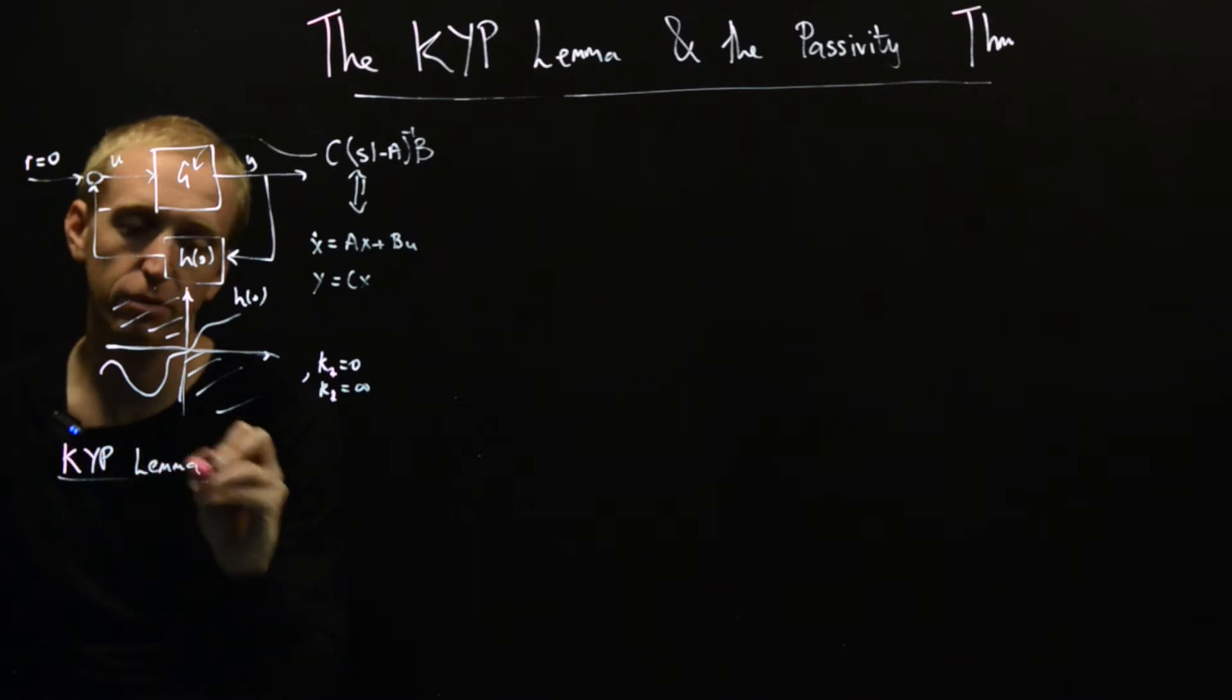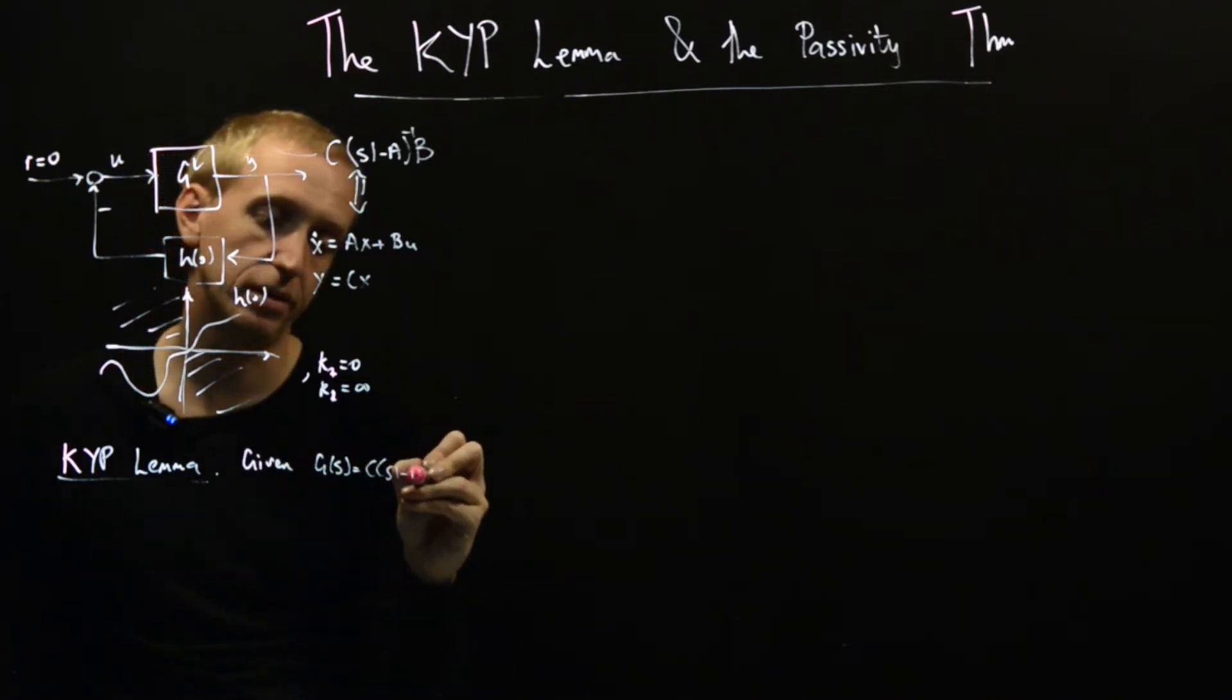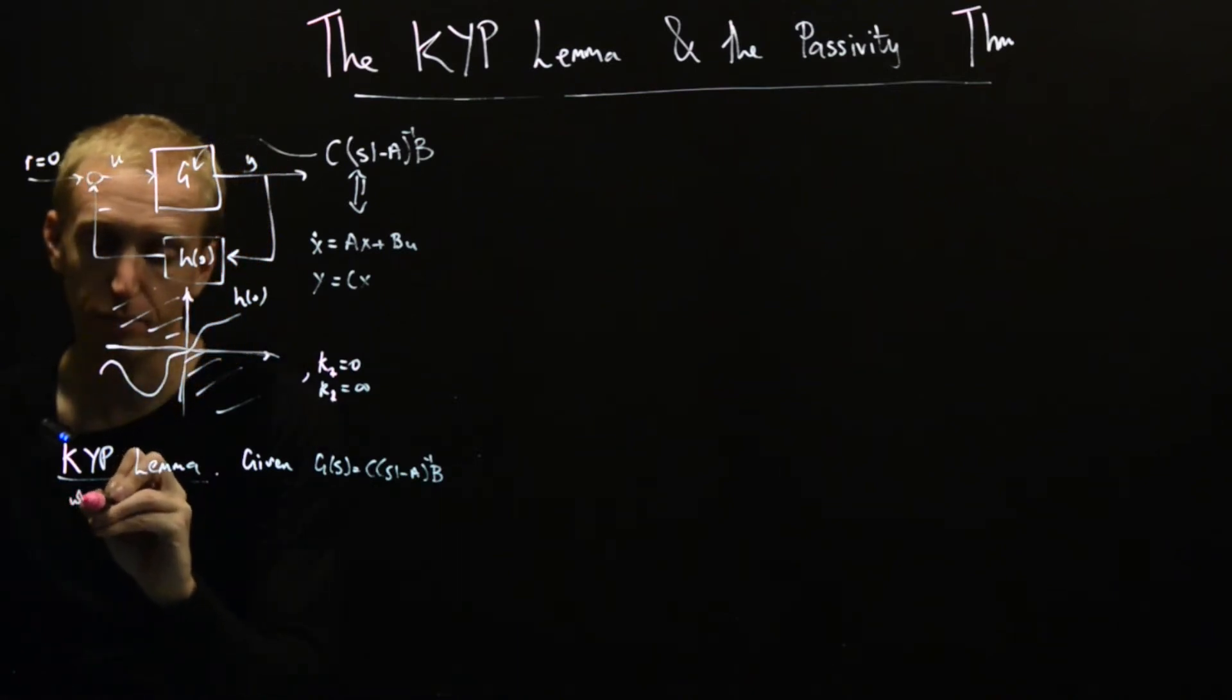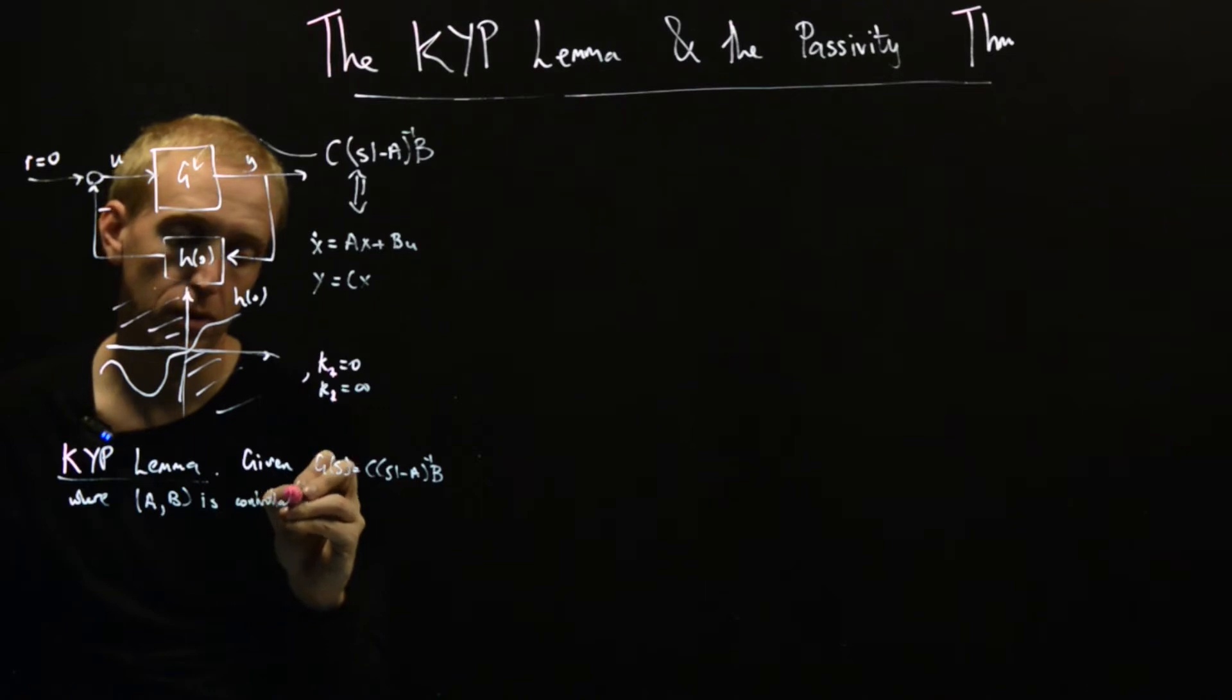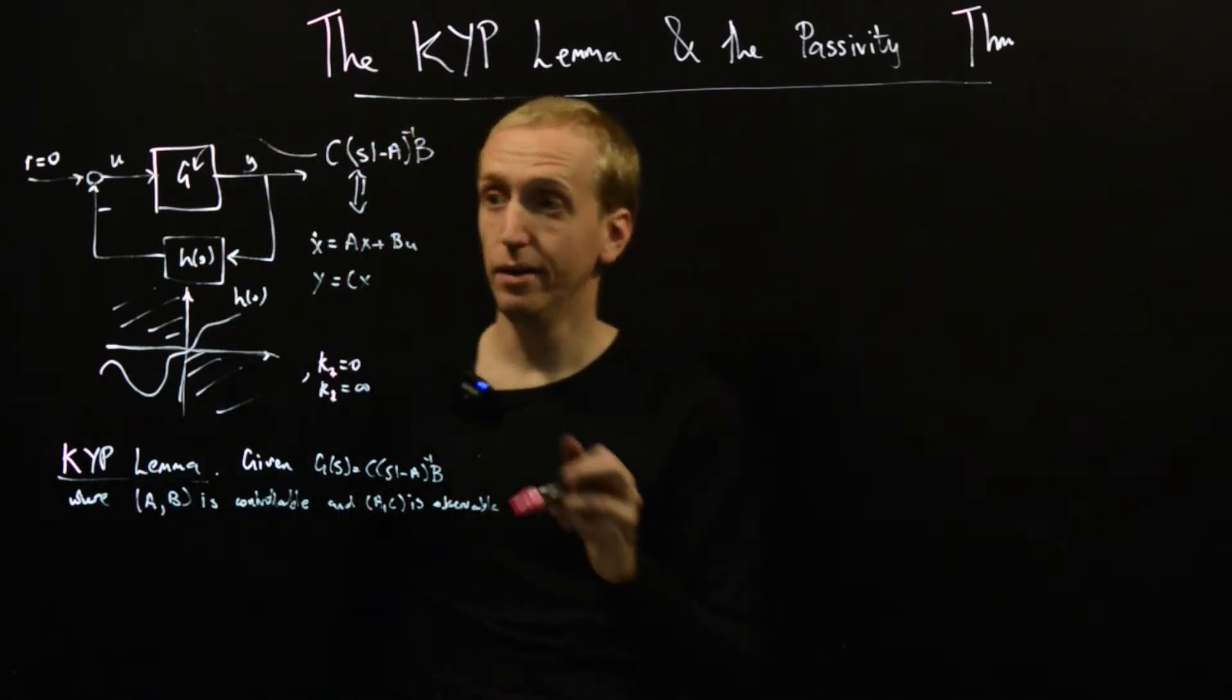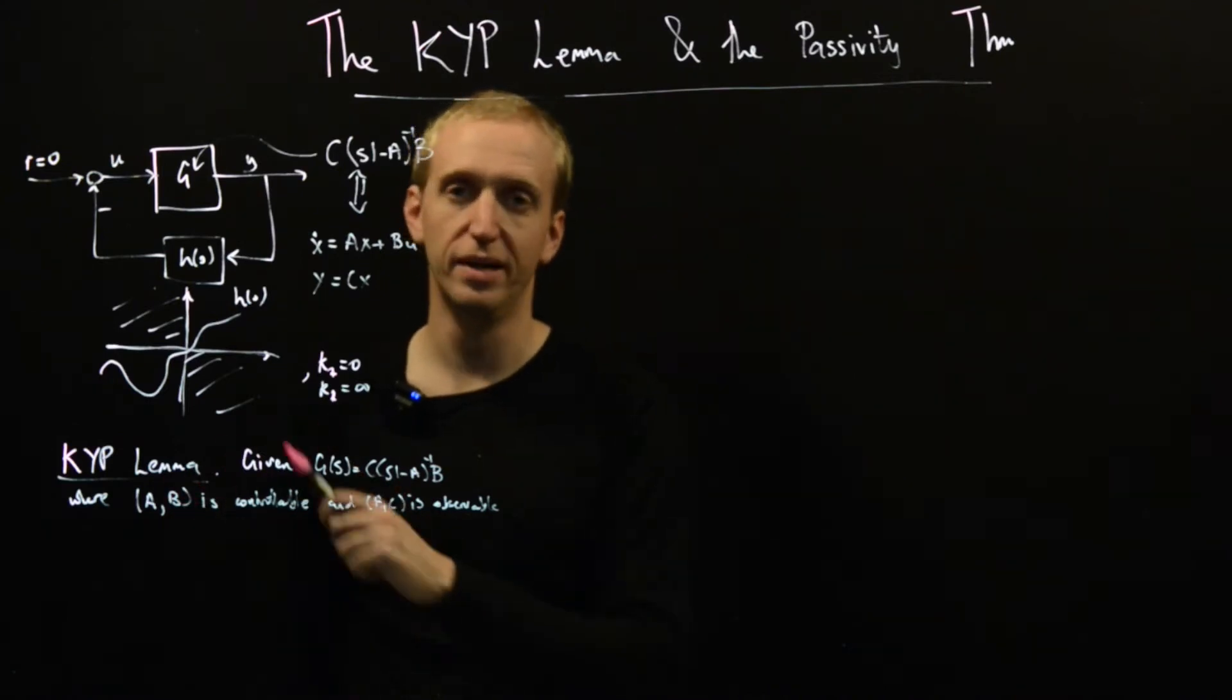Proving the KYP lemma is beyond the scope of this course, but we need to know what it is. It says that given G of S equals C times (sI minus A) inverse B, we have some realization of our transfer function G in terms of our matrices A, B and C. Given such a G where A, B is controllable and A, C is observable - this just means that those controllability and observability matrices that you saw before have full rank.